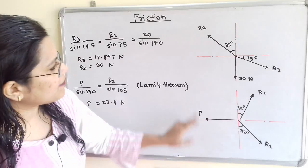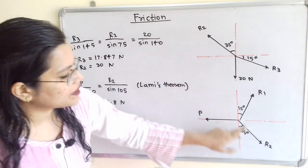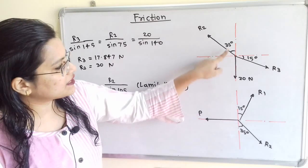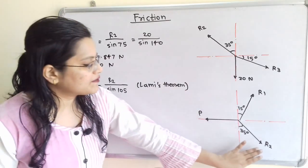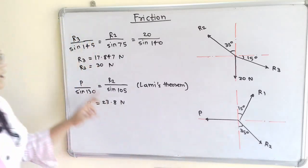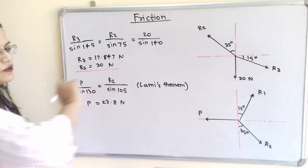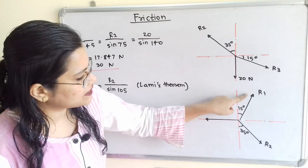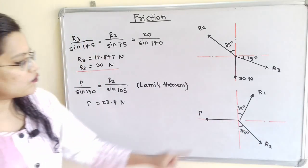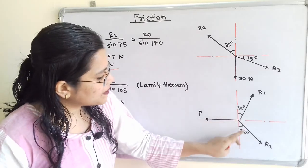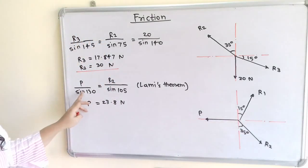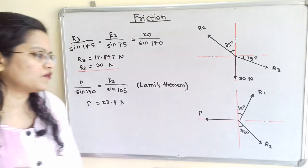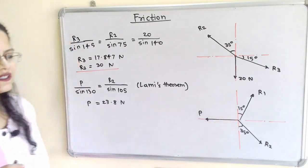Moving to the wedge diagram, R2 has the same magnitude but opposite direction, still making 35 degrees with the vertical. Since R2 is now known, we can find P using Lamy's theorem: P divided by sine of the angle between R1 and R2 equals R2 divided by sine of the angle between the other two forces. The angle between R1 and R2 is 180 minus 15 minus 35, which equals 130 degrees, and the angle used for R2 is 90 plus 15 degrees.